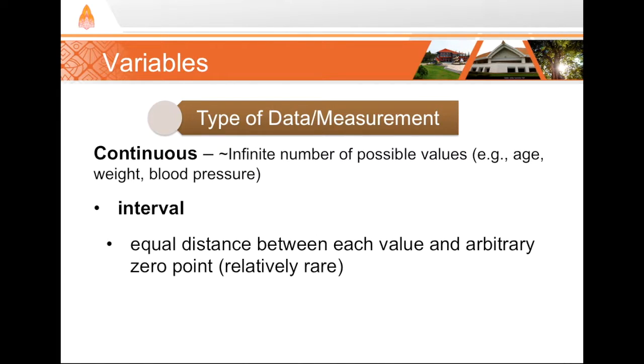A classic example used to demonstrate the other kind of continuous variable, continuous interval, is temperature using the Fahrenheit or Celsius scale. In those cases, 0 does not mean 0 heat or 0 energy. The 0 point is arbitrary. However, if we use the Kelvin temperature scale, 0 would mean 0 heat, and in that case it would be a continuous ratio.